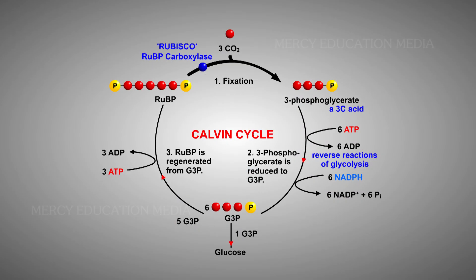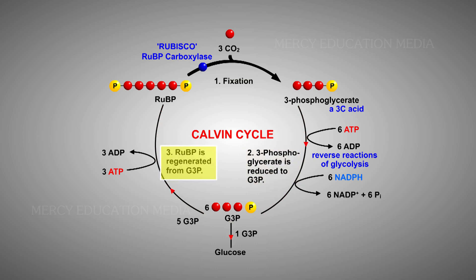The fixation of carbon dioxide in plants during photosynthesis occurs in 3 stages: Fixation, Reduction, and Regeneration of RuBP. What do you know about fixation?